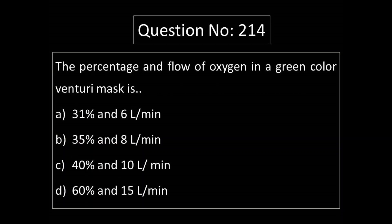Question 2-14. The percentage and flow of oxygen in a green color Venturi mask is: Option A: 31% and 6 liters per minute. Option B: 35% and 8 liters per minute. Option C: 40% and 10 liters per minute. Option D: 60% and 15 liters per minute.